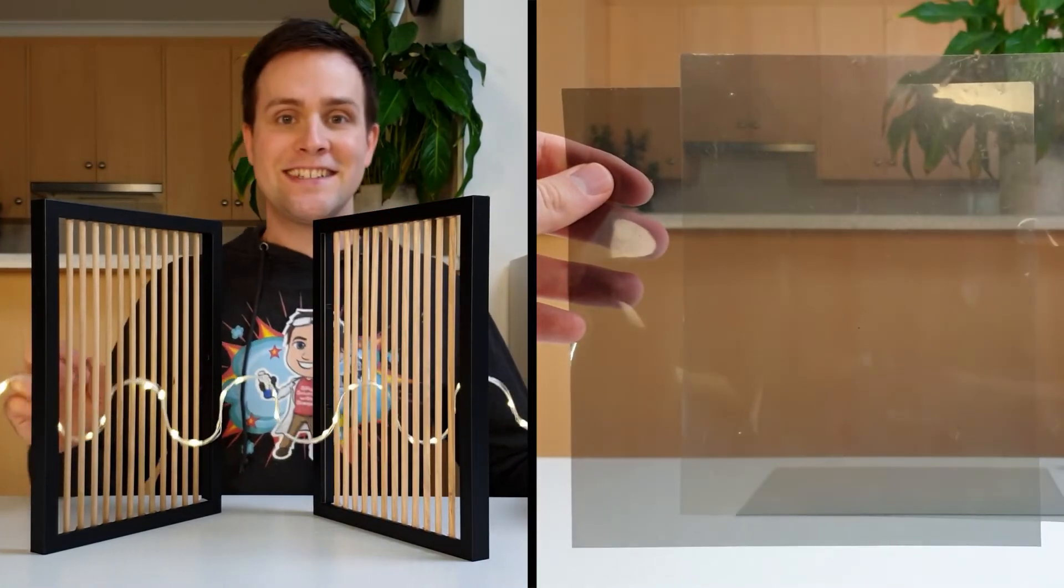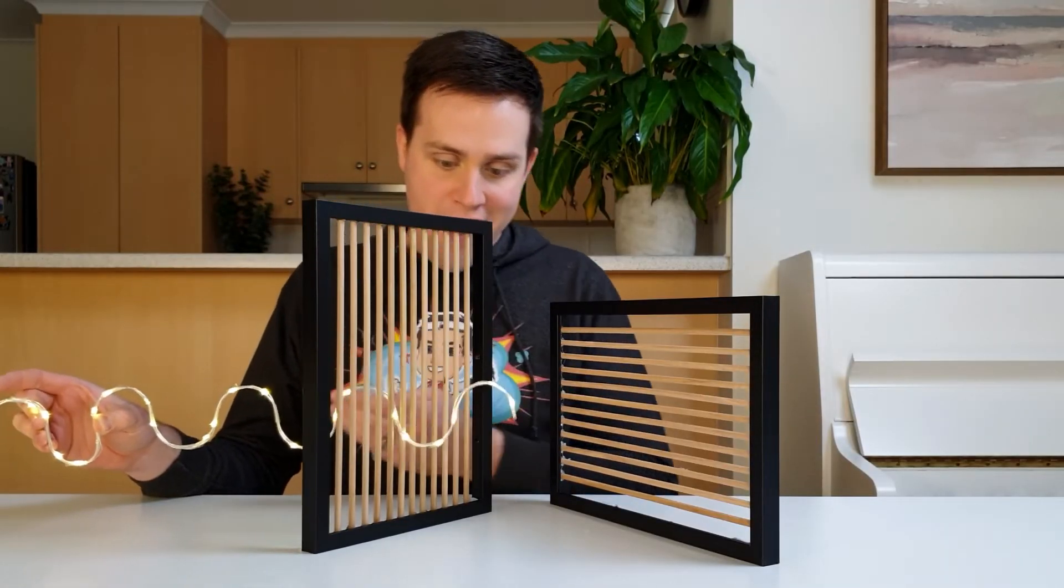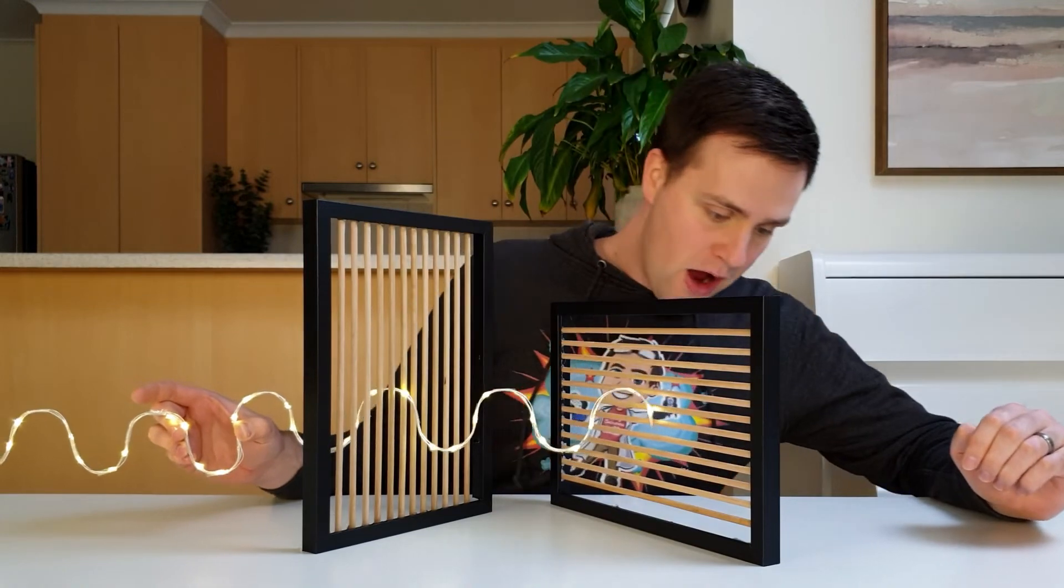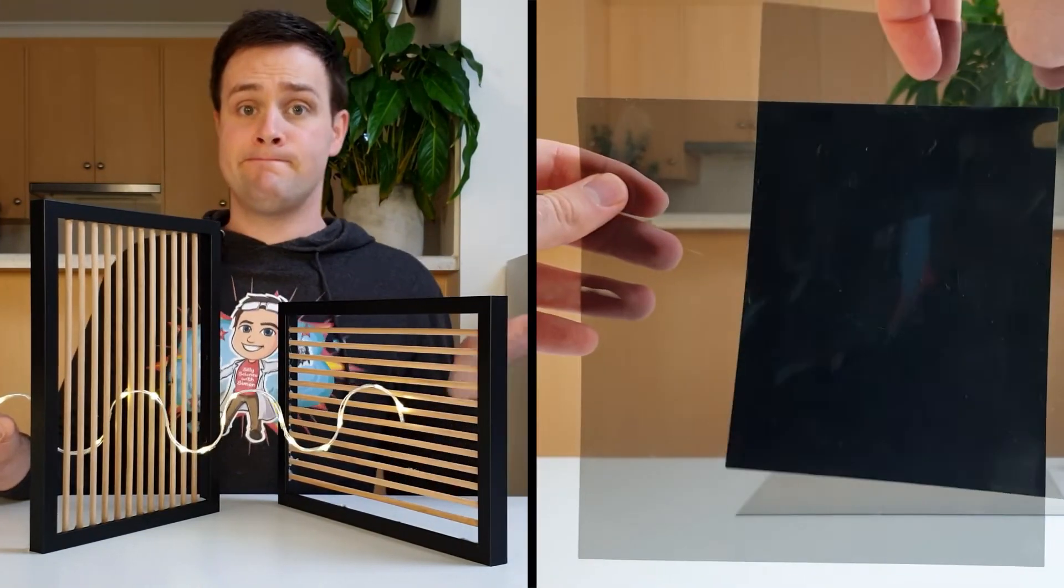But if the second polarizer points at 90 degrees to the first one, then the up and down waves coming out of the first polarizer get stuck at the second, and we don't see any light.